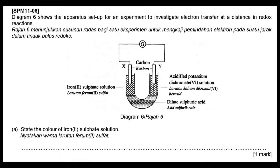This is SPM 2011, question number 6, section A. Diagram 6 shows the apparatus setup for an experiment to investigate electron transfer at a distance in redox reaction. As we can see, the U-tube here with 2 carbon electrodes, with iron(II) sulfate solution and acidified potassium dichromate solution. One of the solutions is the oxidizing agent and iron(II) sulfate solution acts as the reducing agent.